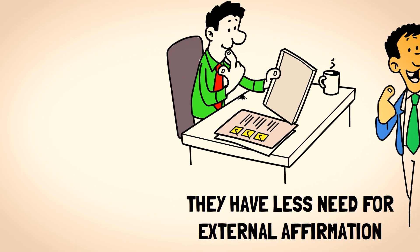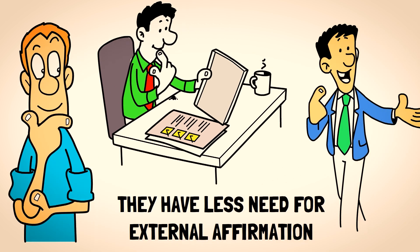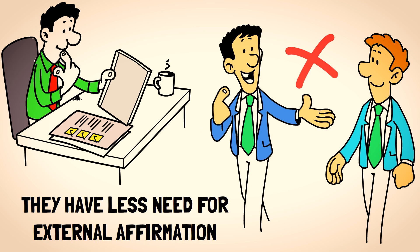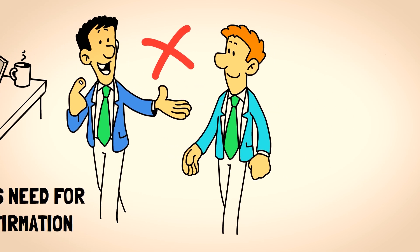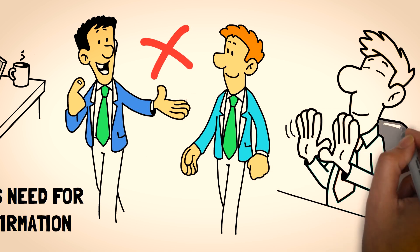Sigma males tend to derive their self-worth and validation from within rather than seeking it externally. They are less affected by social pressures and the need for approval from others. This independence enables them to resist manipulation that attempts to exploit their desires for acceptance or conformity.